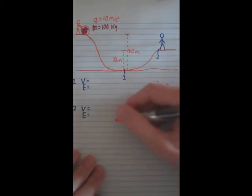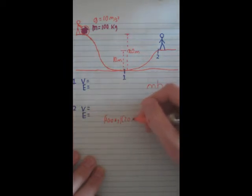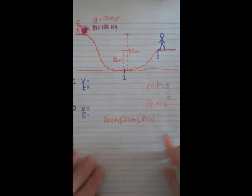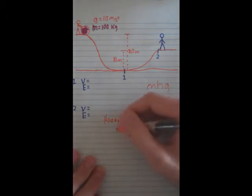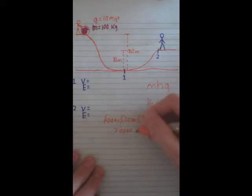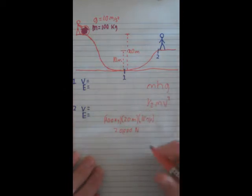So we just multiply mass, 100 kilograms, times height which is 20 meters, times gravity which is 10 m/s². So when you multiply all those together you will get 20,000 joules because that is the unit for energy.